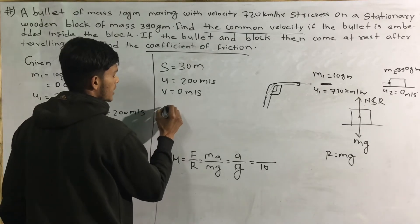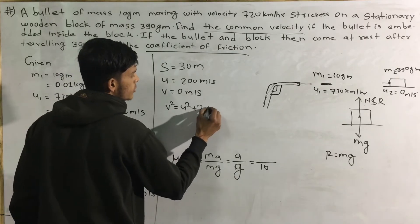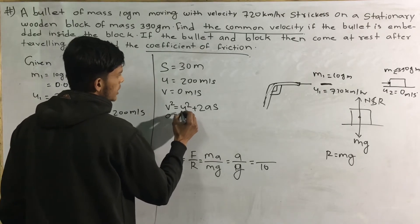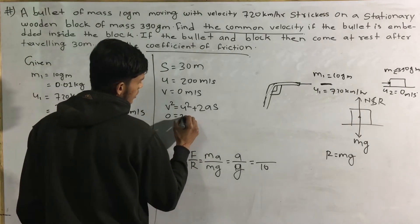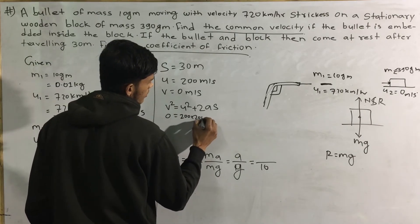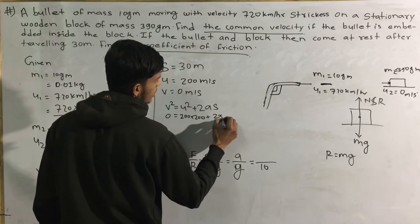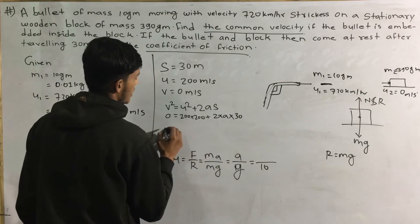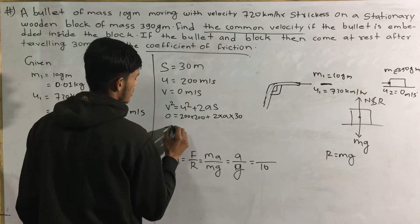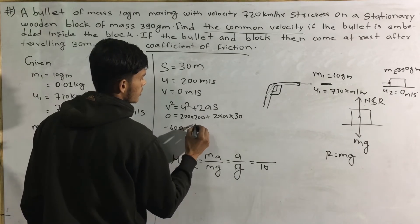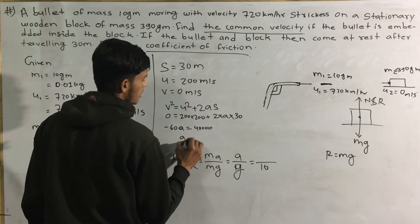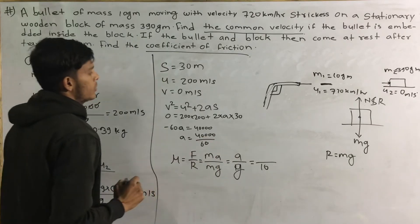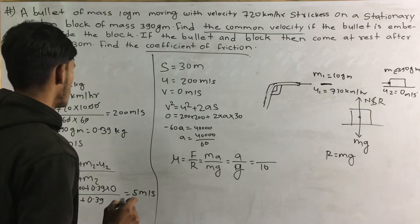Using v squared equals u squared plus 2as: a is 0, u is 206, 2A into S. A is equal to 40 divided by 60A.